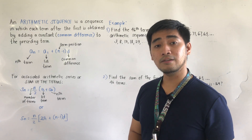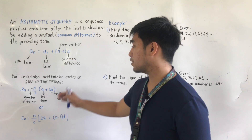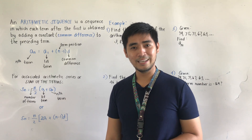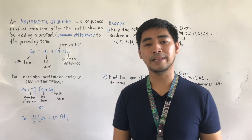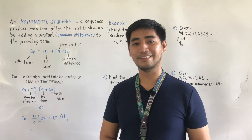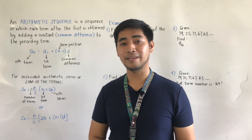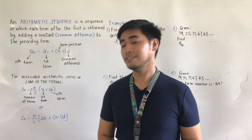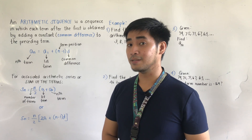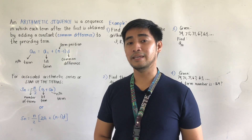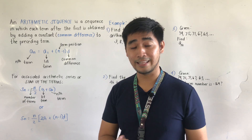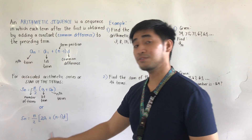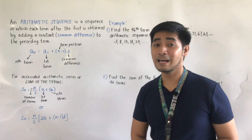If we are not given a_n, we use the alternative formula: S_n = (n/2) × (2a_1 + (n - 1) × d). To recap: for the specific term, use a_n = a_1 + (n - 1) × d; for the sum of the terms, use S_n = (n/2)(a_1 + a_n) or S_n = (n/2)(2a_1 + (n - 1)d).